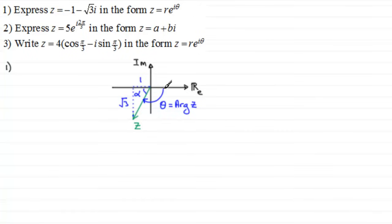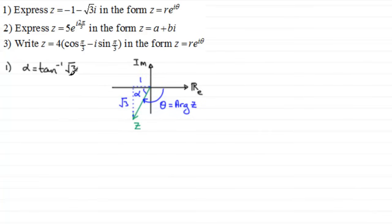Let's first of all get the arg of z. I've put in this acute angle alpha. We can get alpha — it equals the inverse tan of the opposite over the adjacent, so it's root 3 over 1, or simply root 3. In degrees this comes out at 60 degrees, but we must work in radians here.